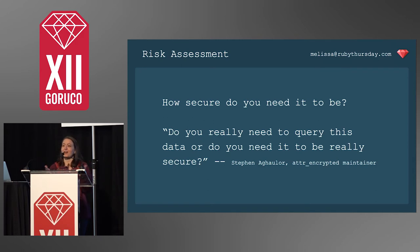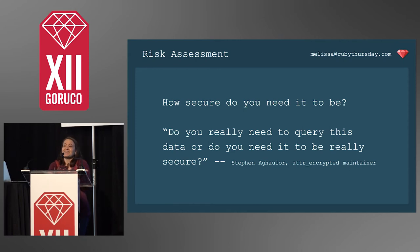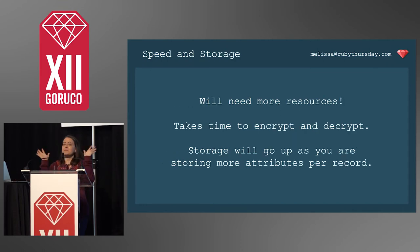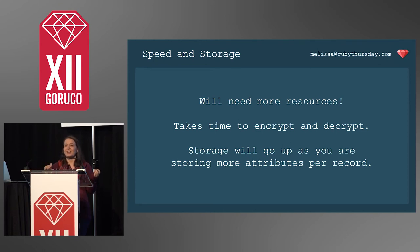You have to think about risk assessment — what is it that you're actually trying to hide? The maintainer of ATTR Encrypted responded to someone on a GitHub issue complaining they couldn't search with the gem, and he said: do you really need to query this data, or do you need it to be really secure? If it's a bank account number, you'd want it really secure; if it's a physical address, same. But maybe something as fluid as an email address, you can take a little bit more risk. You still need to consider encrypting it. On speed and storage: your needs will go up — it takes time to encrypt and decrypt, it's another process on top of what you're already doing, and your storage needs will increase because you'll be saving more columns to refer to that encrypted data.